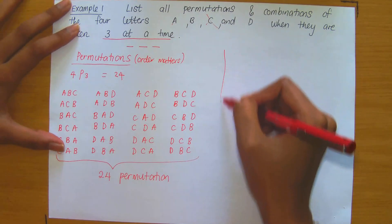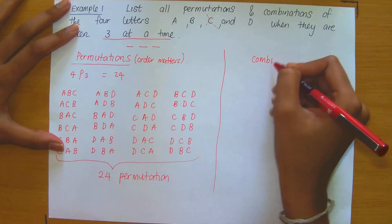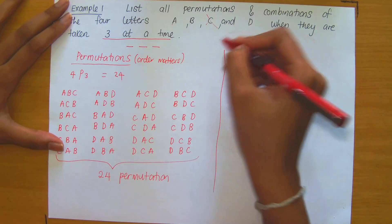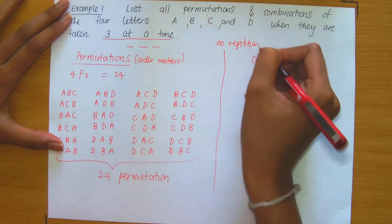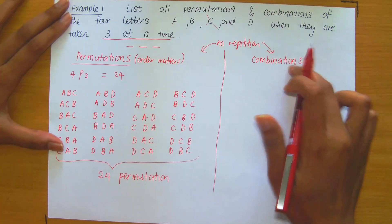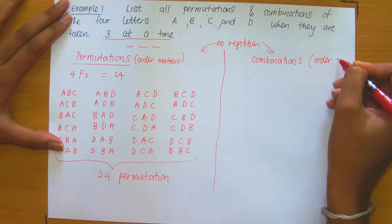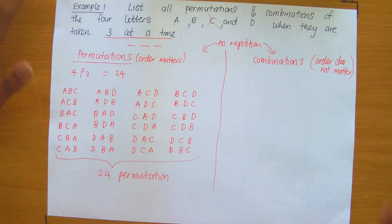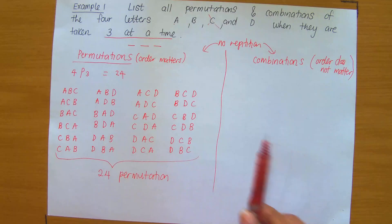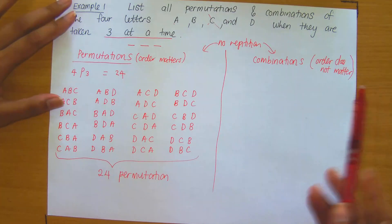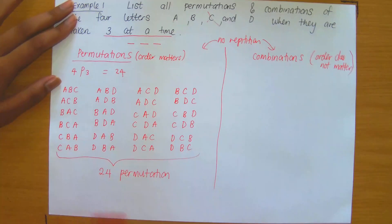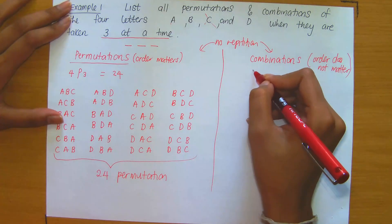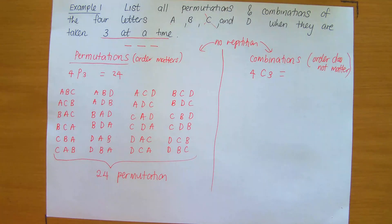Now what happens if we're dealing with combinations? When finding combinations, remember there is still no repetition allowed. However, in this case order does not matter. That means the list of combinations is going to be far fewer than the list of permutations. We have four letters choosing three, so we compute 4 choose 3. You can enter this into your calculator.